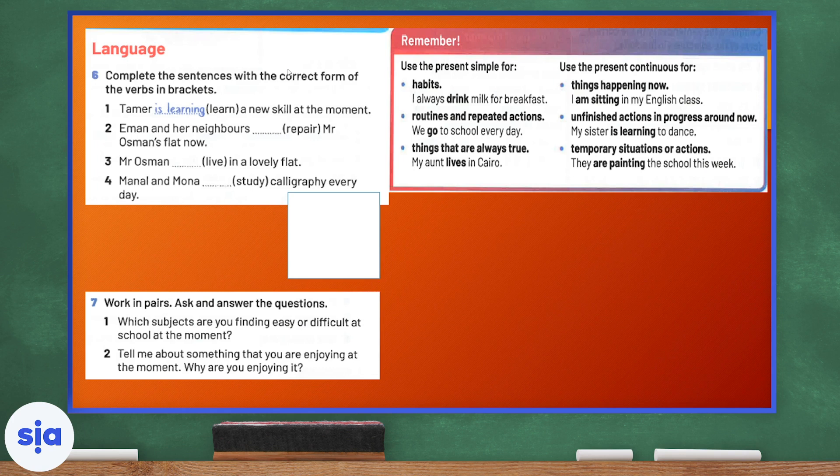Now, we're going to move on to our language section. We're going to be using sentences in the correct form of the verb in brackets. It may be the present simple or the present continuous. When do we use the present simple tense to talk about habits or things that we do regularly, repeated routines and actions, and things that are always true. As for the present continuous, we talk about things that are happening now or unfinished actions in progress around now or temporary things or situations or actions. Number one, Tamir is learning a new skill at the moment. Iman and her neighbor repair Mr. Osman's flat now. The answer is, of course, are repairing because they're doing it now.